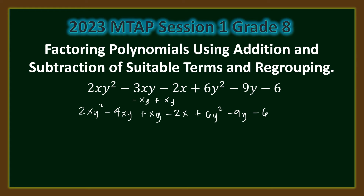Next, we regroup the polynomial as: the binomial (2xy² minus 4xy), plus the binomial (xy minus 2x), plus the trinomial (6y² minus 9y minus 6). Then, we factor each group — using common monomial factor for the first two groups, and factoring quadratic trinomials for the third.